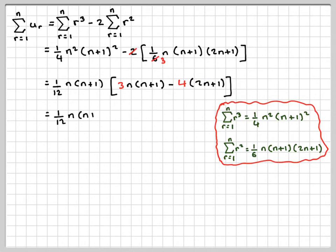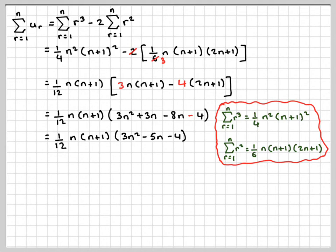OK, so that's going to give me 1 twelfth n(n plus 1). Multiplying out that bracket gives me 3n squared plus 3n minus 8n plus, sorry, minus 4. Minus times the plus is minus. Let's just be careful with the signs. OK, so that gives me 1 twelfth n(n plus 1)(3n squared minus 5n minus 4) as our answer.